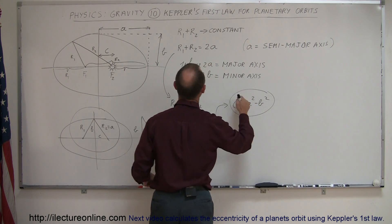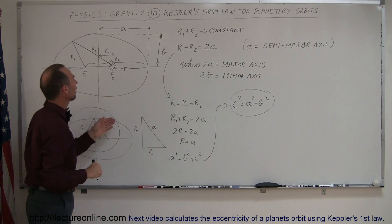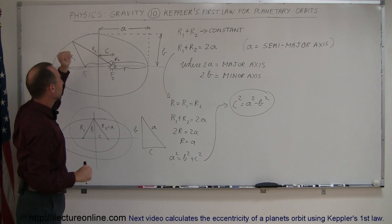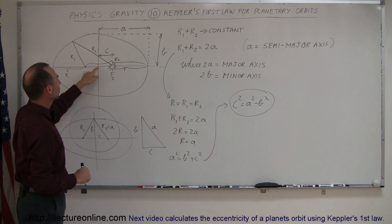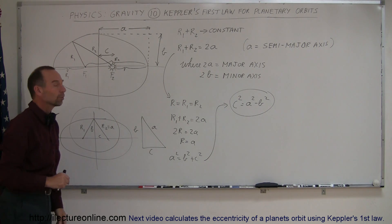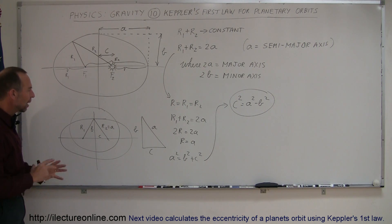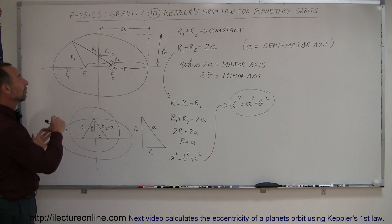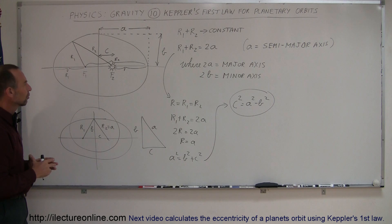So, that gives us the relationship between A, B, and C, the semi-major axis, the semi-minor axis, and the distance from the central point to where the sun would be. So, it gives you a feel of how we work with the various components of Kepler's first law. Now, what's really interesting about this law is, we can then also figure out what the eccentricity is of this orbit, and that's what the most important part is of the first law of Kepler.